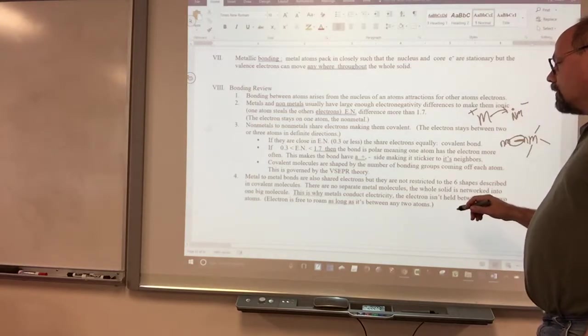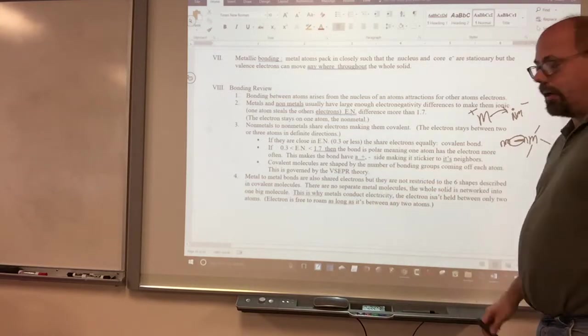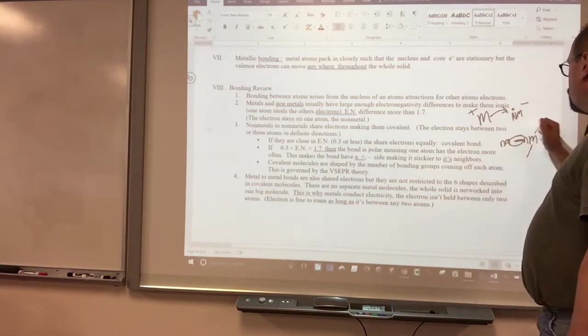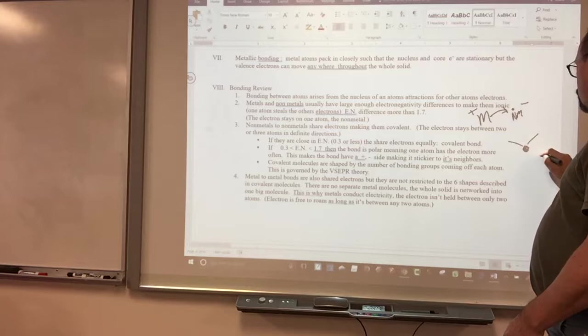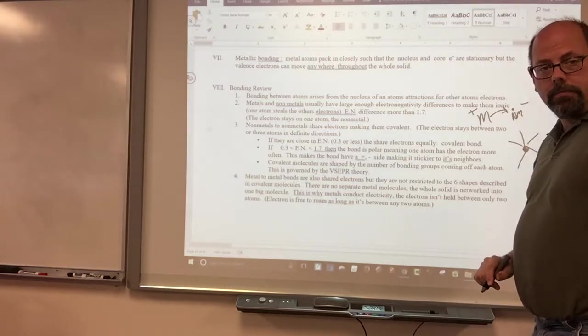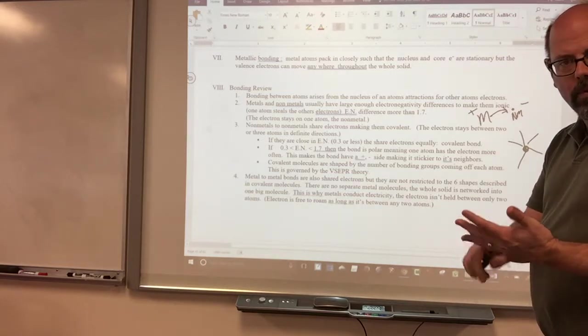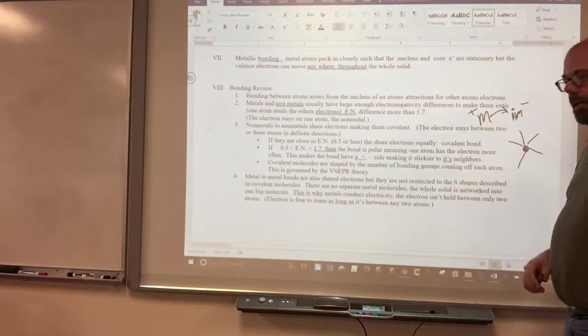Covalent molecules are shaped by the number of bonding groups coming off the center atom, formed by VSEPR theory. If there's three groups coming off, it's going to be trigonal planar. If there's four groups coming off, 1, 2, 3, 4, 5, that's going to be trigonal bipyramid. You just have to learn one group, two groups, three groups, four groups. Look at the center atom, how many groups are coming off, and you can tell the shape.